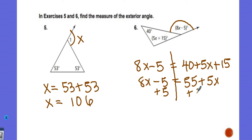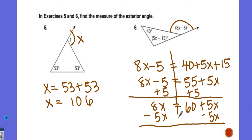I'm going to add the five to both sides, so we get 8X equals 60 plus 5X minus 5X. So we get 3X equals 60.